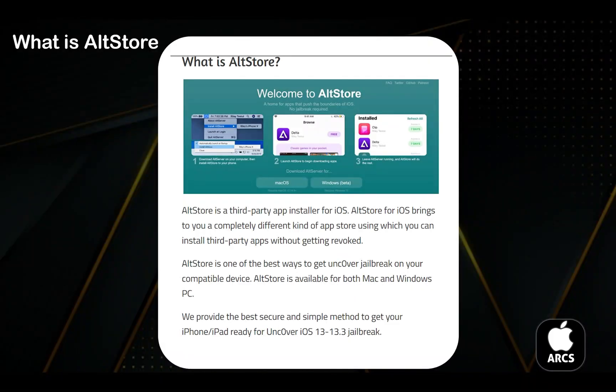What is Altster? Altster is a third-party app installer for iOS. Altster for iOS brings a completely different kind of app store, using which you can install third-party apps without getting revoked. It is one of the best ways to get Uncover Jailbreak on your compatible device.